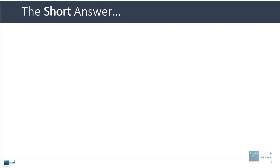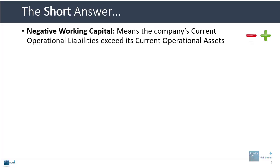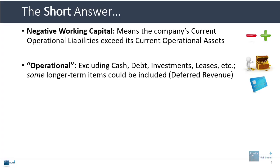Let's start with the very short answer. Negative working capital means that the company's current operational liabilities exceed its current operational assets. Operational means that we're excluding items like cash, debt, investments, and leases. Some longer-term items could potentially be included, such as long-term deferred revenue, if they're related to the day-to-day operations of billing customers, collecting cash, paying suppliers, and so on and so forth.